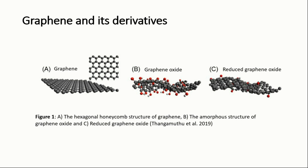The structure of graphene-based nanomaterials can be modified through different methods, some of which are exerted during the synthesis and some are implemented by adding polymers, metal nanoparticles, or biomolecules.